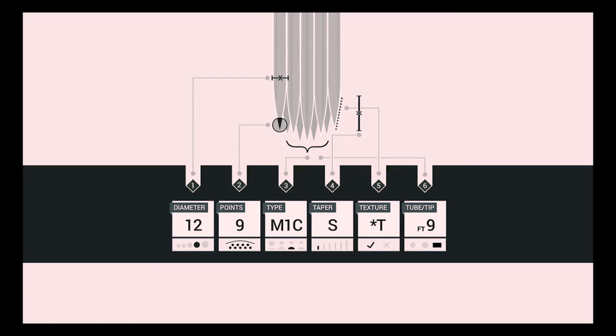The sixth and final part of the new label system identifies needle and tip compatibility. We will now discuss the six parts of the new label system, starting with diameter.